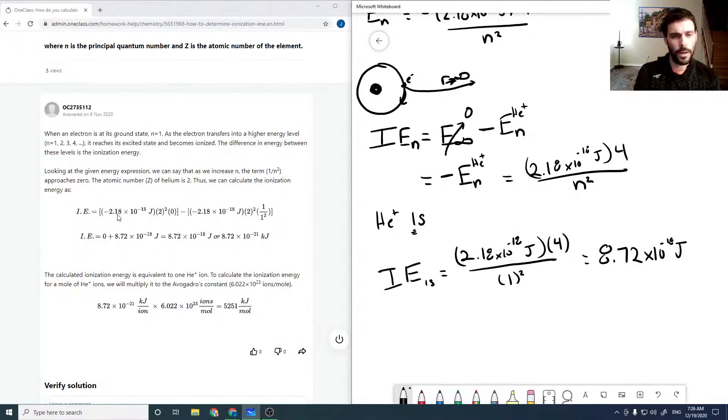So as n goes to infinity, basically this goes to 0. And so the first term goes to 0, and we just skip this. Okay, that's good.